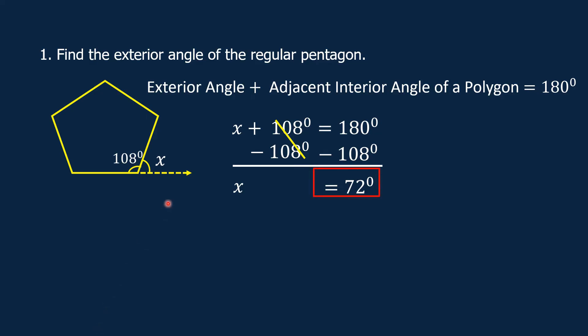We can check by addition: 72 degrees plus 108 degrees is equal to 180 degrees.